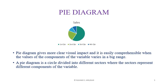Now we will discuss the pie diagram, which is a two-dimensional diagram. There are two types of diagram: one-dimensional diagram and two-dimensional diagram. One-dimensional diagram is a bar diagram, and two-dimensional diagram is a pie diagram. Sometimes the number of components of a variable is large, and an alternative method to represent data — other than multiple, subdivided, or percentage bar diagram — is the pie diagram.